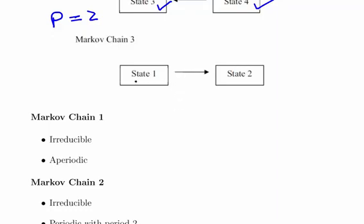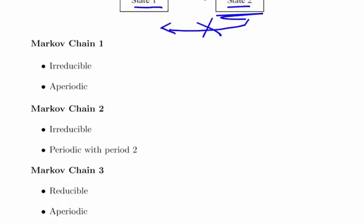Finally, Markov chain 3: is this irreducible? No, it's not, because you can go from state 1 to state 2, but it's not possible to go from state 2 back to state 1. So it is reducible. It's also aperiodic because once it goes into state 2, it can't leave state 2. It's not possible to go out somewhere and come back.